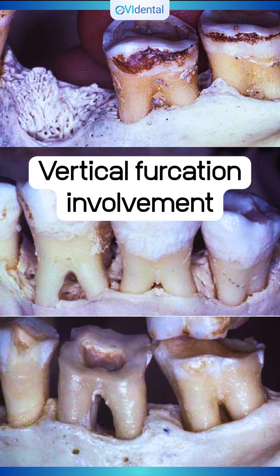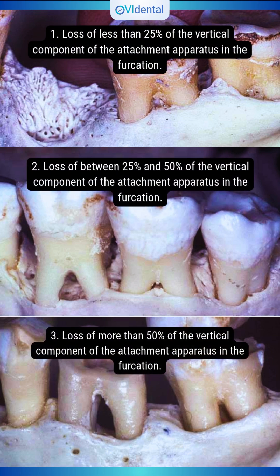Vertical furcation involvement. Grade 1: Loss of less than 25% of the vertical component of the attachment apparatus in the furcation. Grade 2: Loss of between 25% and 50% of the vertical component of the attachment apparatus in the furcation. Grade 3: Loss of more than 50% of the vertical component of the attachment apparatus in the furcation.